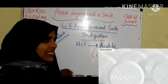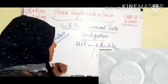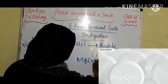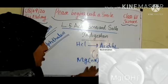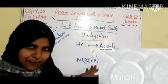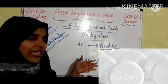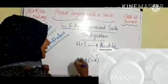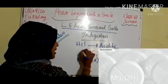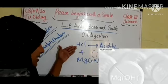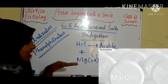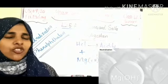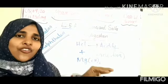Which base do we take inside? That is magnesium hydroxide. Magnesium hydroxide is a base — like an antacid that we take for acidity. So what reaction happens in the stomach? When acid mixes with the base, it will neutralize the acid effect, and pain is also relieved.